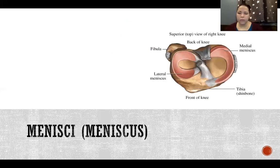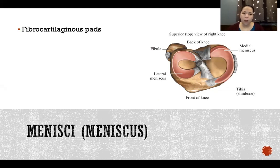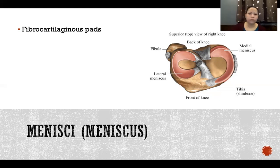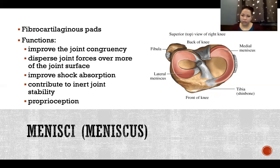We also have the menisci, which help with stability. Meniscus is singular, menisci plural — they are fibrocartilaginous pads like we have in many joints throughout the body, but in the knee we specifically call them menisci. They have lots of functions: they help to improve joint congruency, which is really always true of fibrocartilaginous pads regardless of what joint we're looking at, so the bones fit together a little bit better.